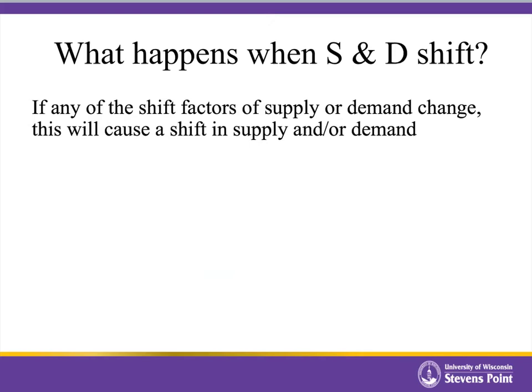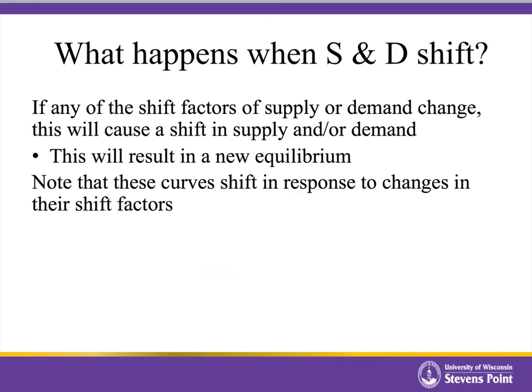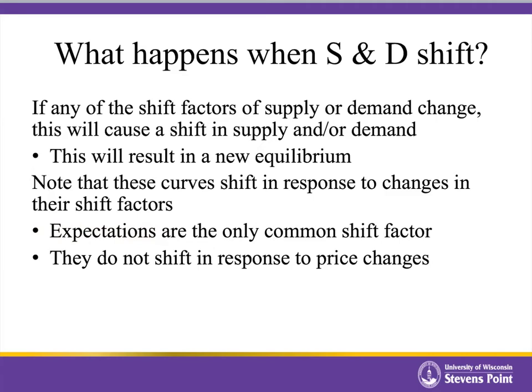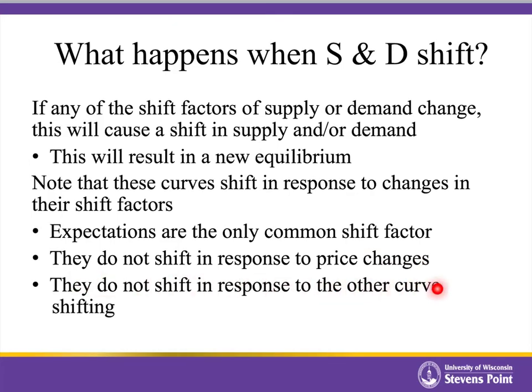Now that we've described what equilibrium looks like, what happens when our supply and demand curves start shifting? If any of our shift factors of supply or demand change, that's going to cause a shift in one or both of the curves. When the curve shifts, that defines an entirely new equilibrium — a new equilibrium point that the market will move toward. Note that expectations are the only shift factor that shows up on both lists — both supply and demand — so on the exam I won't tend to ask questions requiring analysis of expectation changes. Also, the supply and demand curves do not shift in response to price changes; when the price changes, we simply move along the curves. And supply and demand do not shift in response to the other curve shifting.